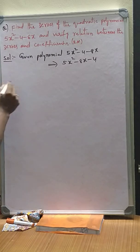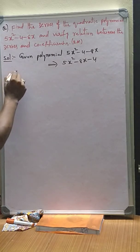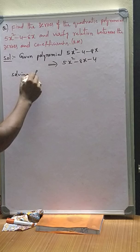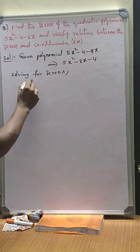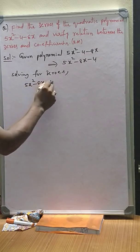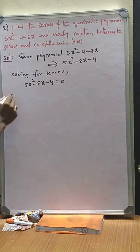Let us solve for the zeros. Solving for zeros: 5x² - 8x - 4 should be equated to 0.